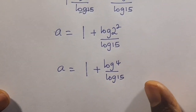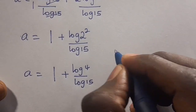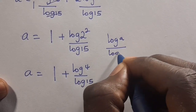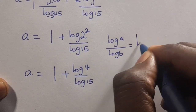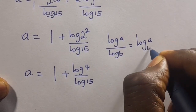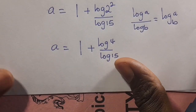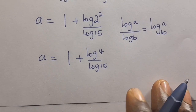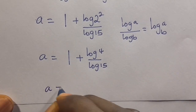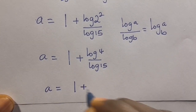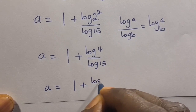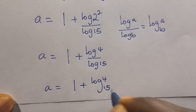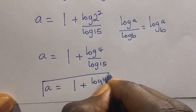We recall that log A divided by log B equals log of A in base B. So this gives us A equals 1 plus log 4 in base 15, which is the value of A.